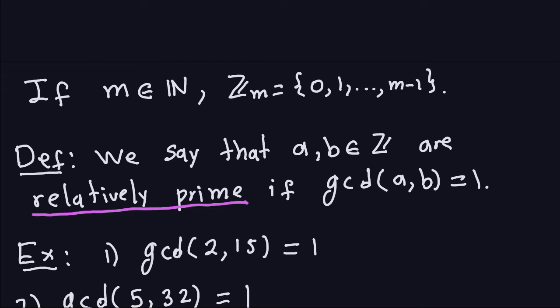Being relatively prime just means that a and b don't have any common factors. That's basically what it means, because the only common divisor will be 1. So relatively prime — you can think about it as having no common factors.